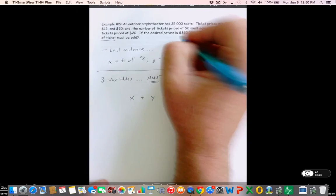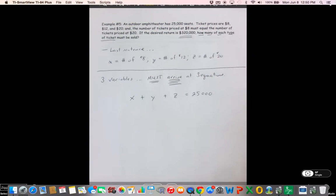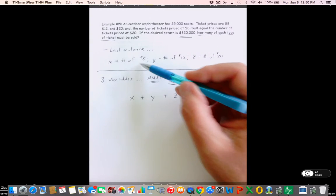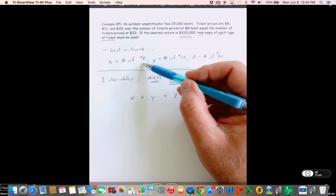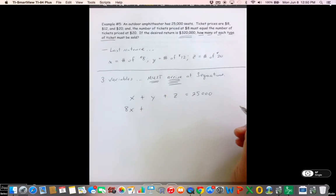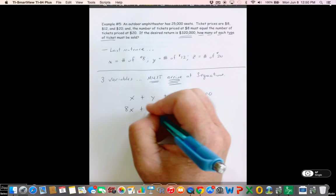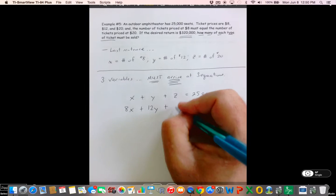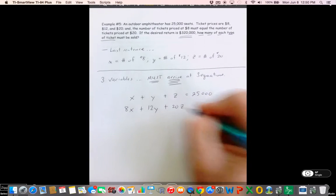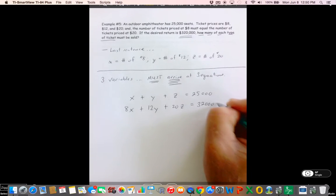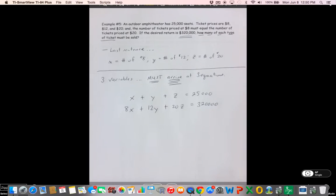The next thing, it tells me that the money has to be $320,000. So if I think about the number of $8 tickets I sold, I can find the revenue by taking 8 times the number I sell. I can get the revenue from the $12 tickets by taking 12 times the number of those that I sell. And I can take $20 times the number of $20 tickets I sell. And I know that has to be $320,000.